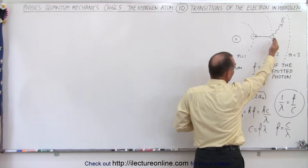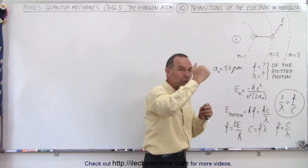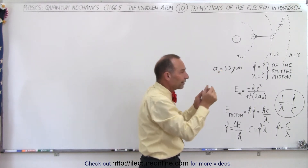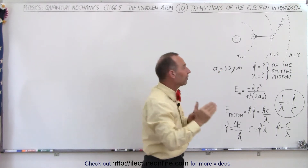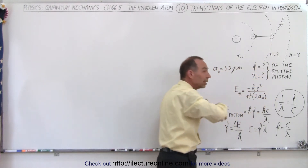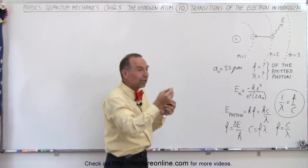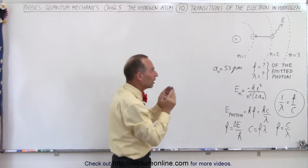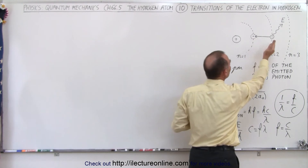For example, when an electron jumps from a higher level down to a lower energy level, it gives off a photon that has the exact equal amount of energy between the two levels. In reverse, when an electron jumps to a higher energy level, it must absorb a photon that has the exact amount of energy between the two levels.